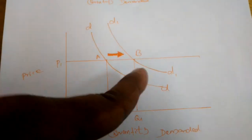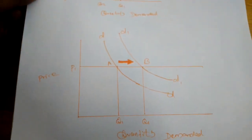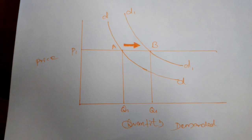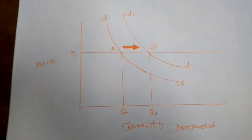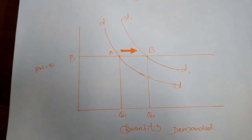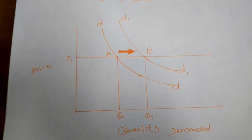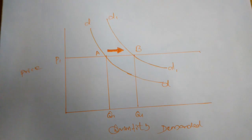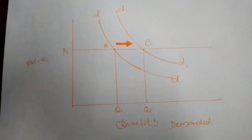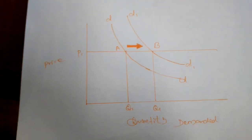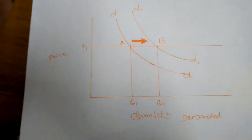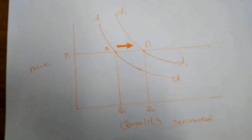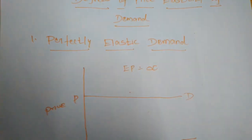We must know the difference between extension/contraction and shift in demand curve. Extension and contraction of demand occurs only when the quantity demanded changes due to a change in price alone. But a shift in the demand curve occurs when price remains equal and other determinants of demand change.